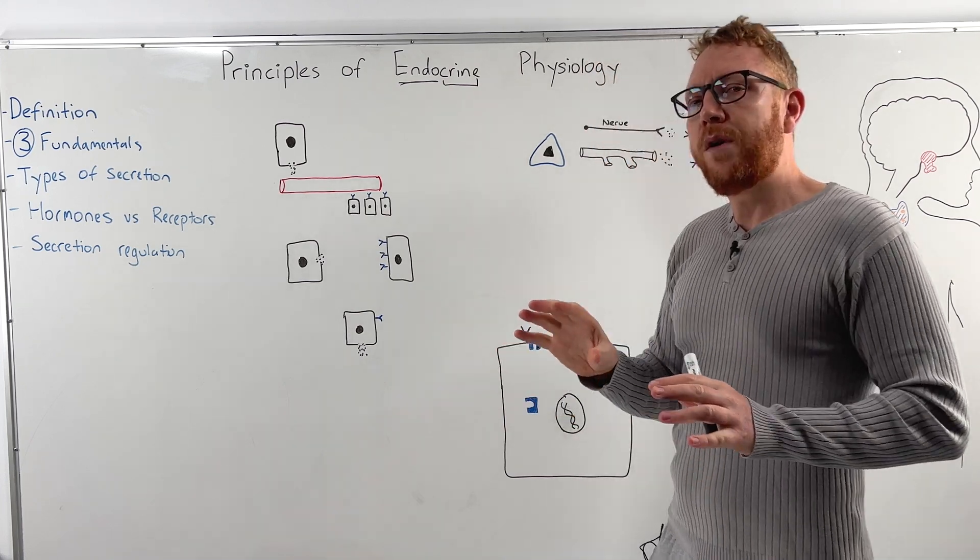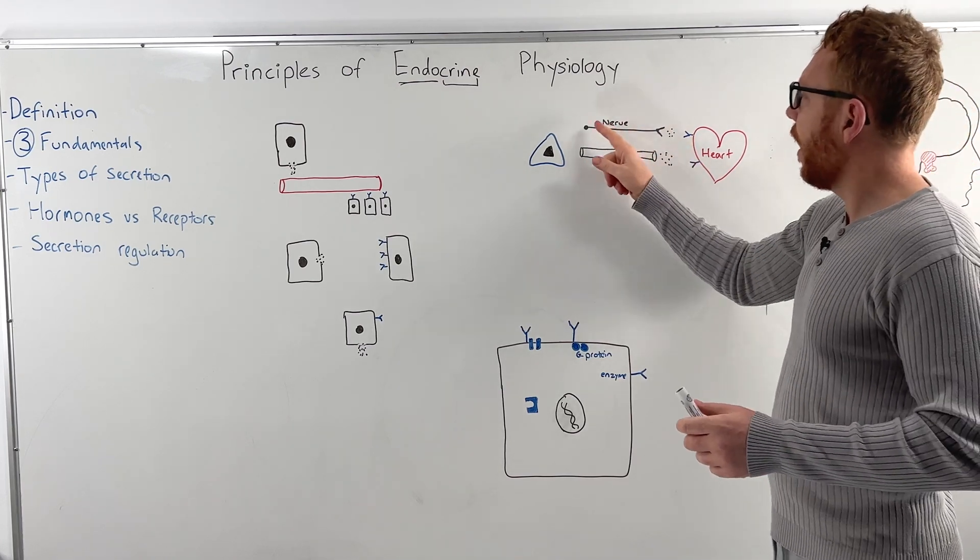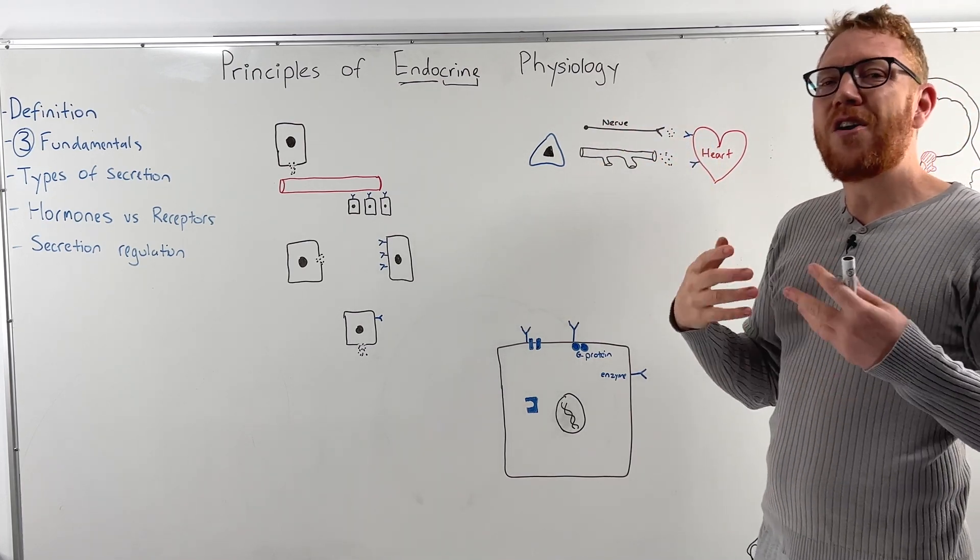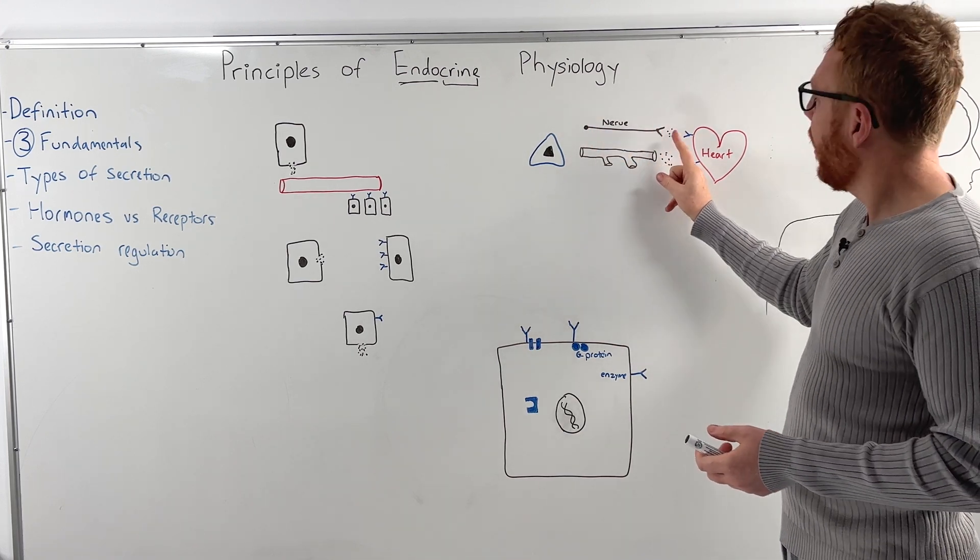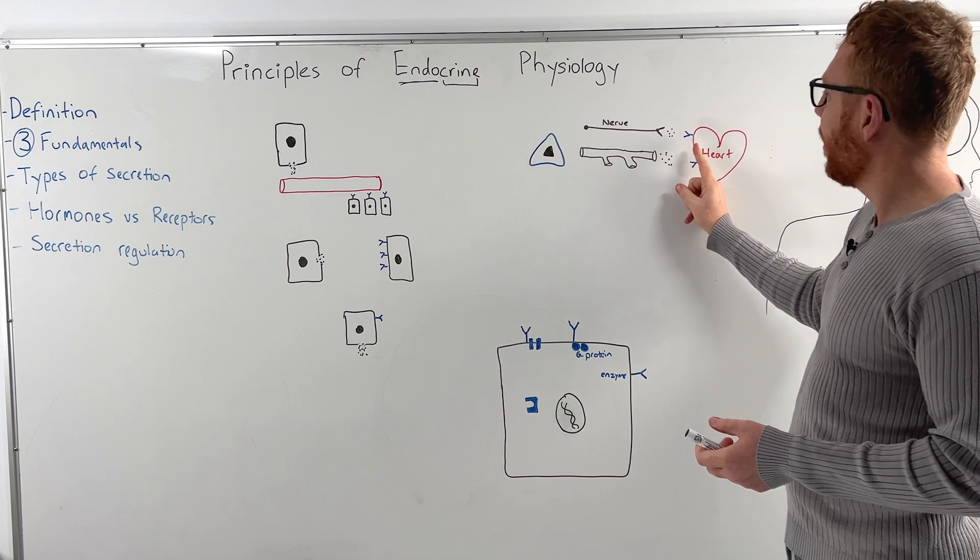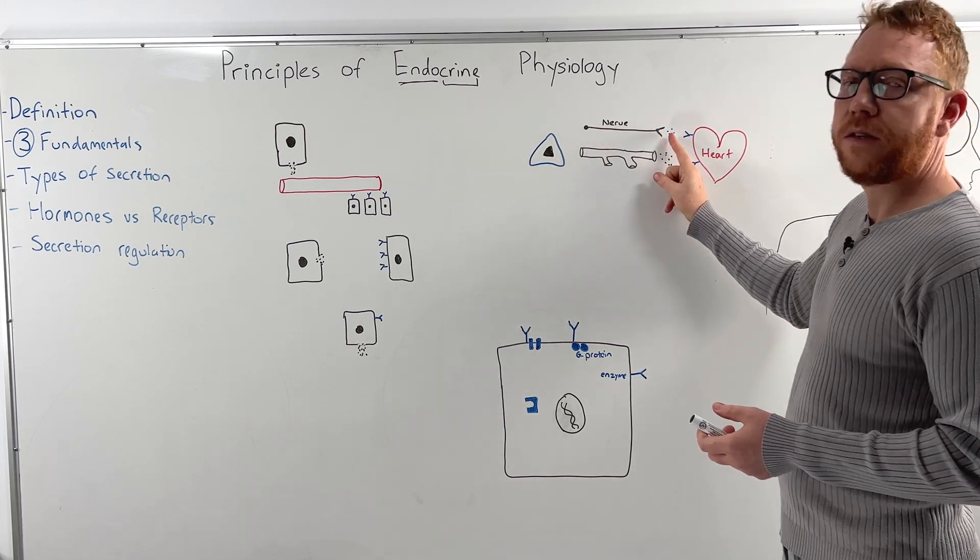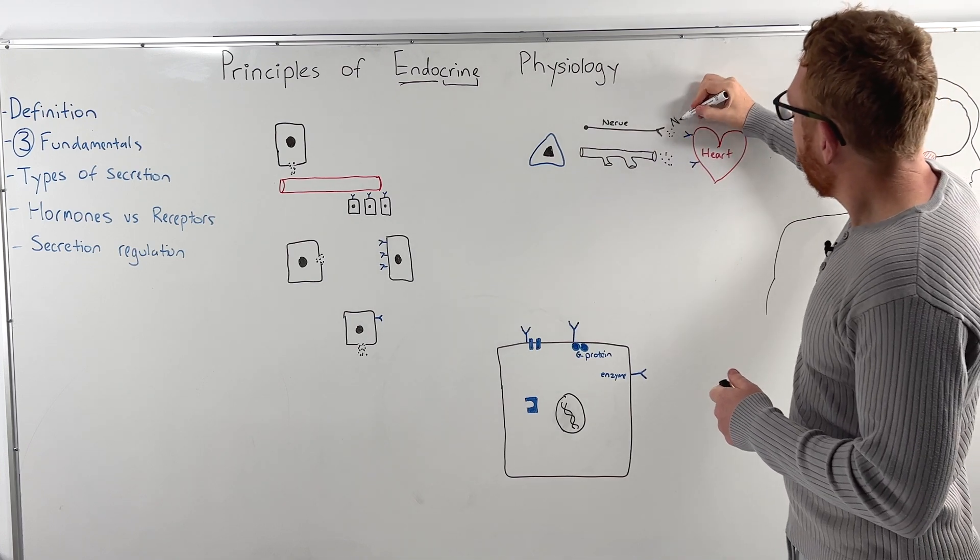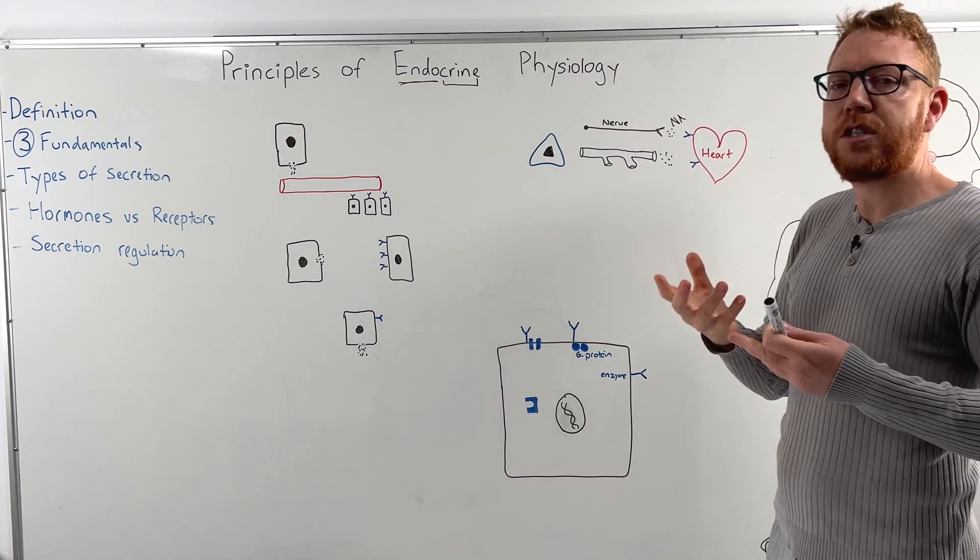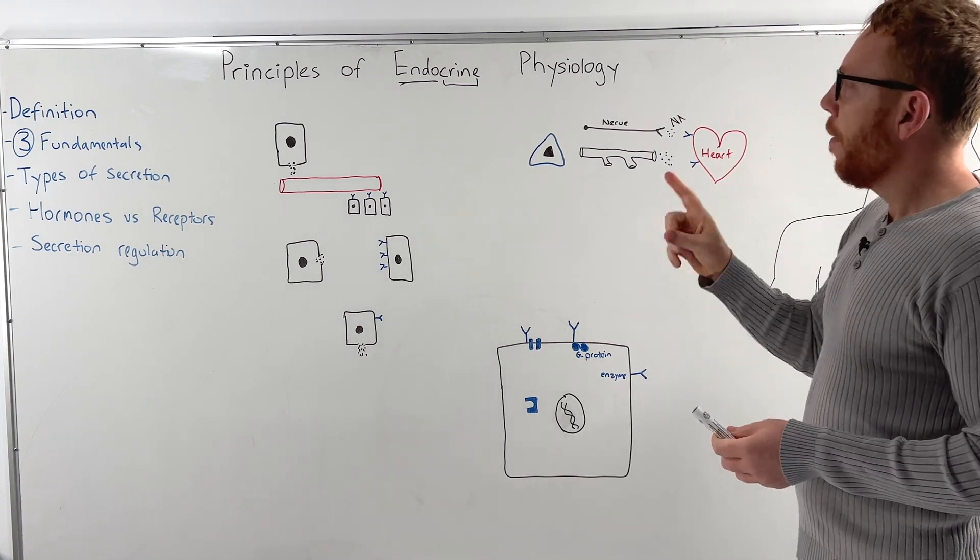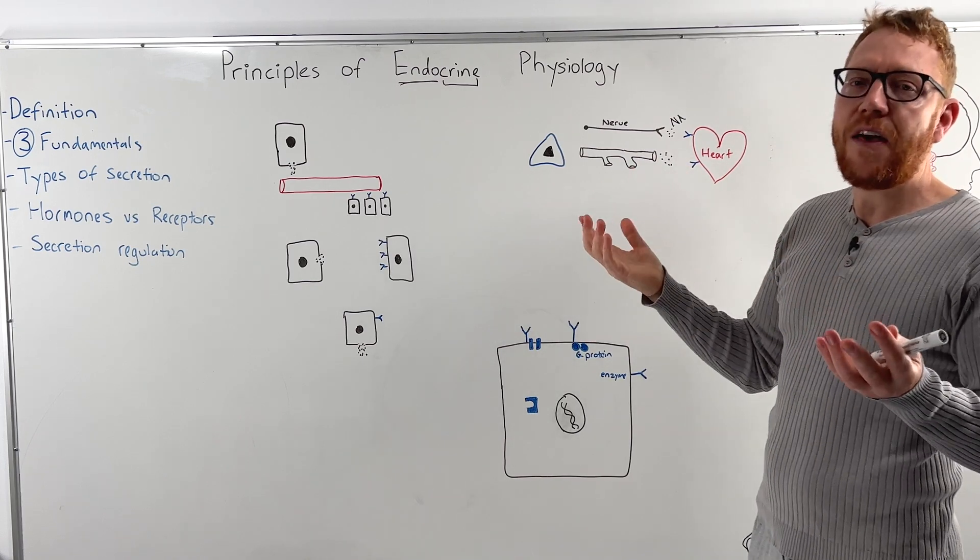So we've already come across nerves as a communication system. So these communication networks rely on electricity. So a nerve will send an action potential down then release a neurotransmitter that can act on a target organ. Let's say the heart. So this nerve releases noradrenaline into the system into the synapse, binds to the receptor and then tells the heart to speed up and be more powerful.